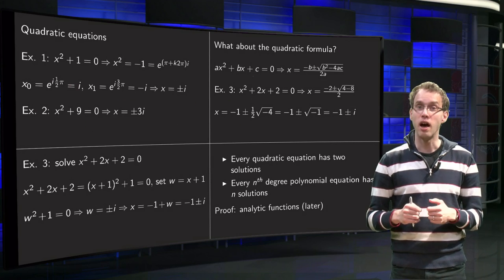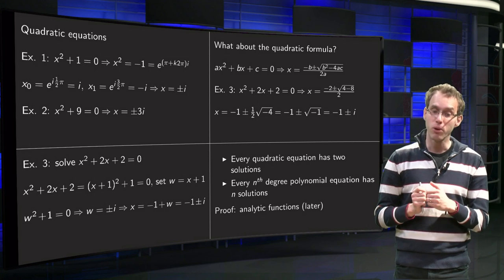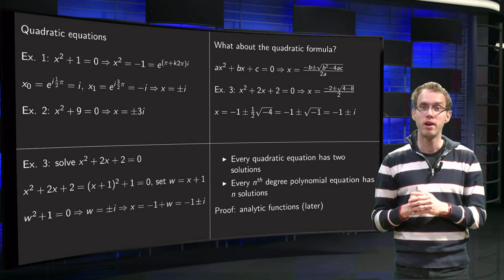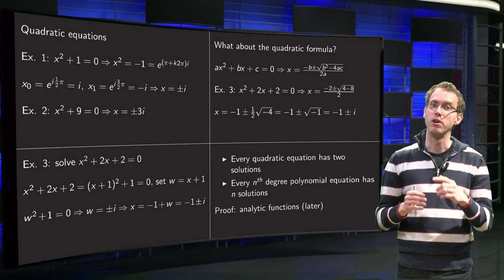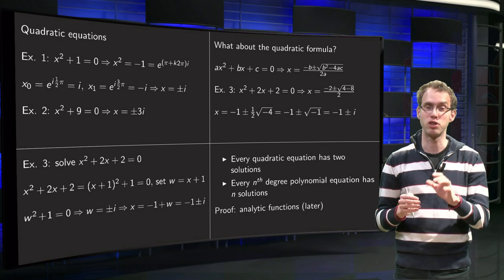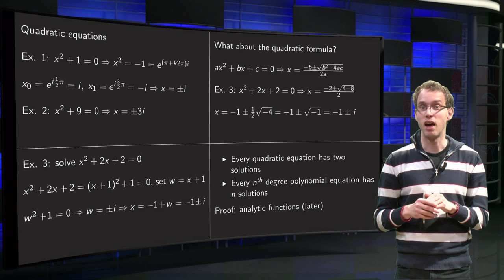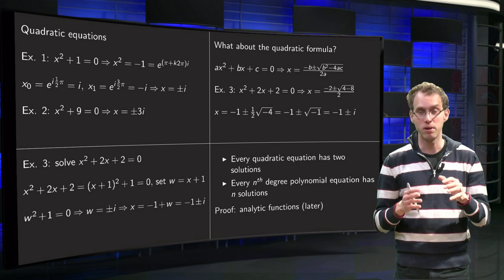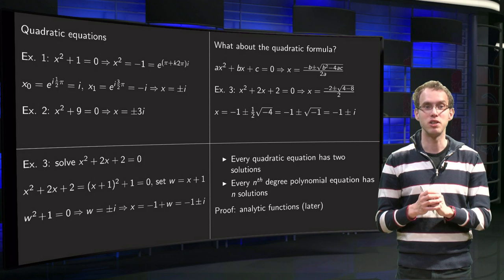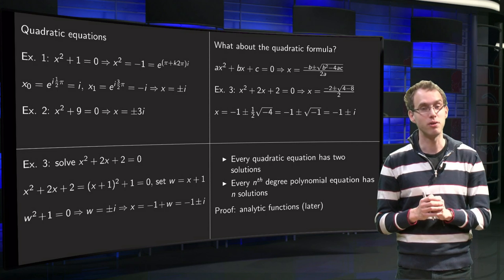To summarize: we now have that every quadratic equation has two solutions. Later on we will see that every nth degree polynomial has exactly n solutions — this is a really nice theorem, though it's not constructive, so it won't tell you how to find them. To prove that statement we will need to understand analytic functions, which will come later. For now, you can use the result that any nth order equation has exactly n solutions when you allow complex numbers.